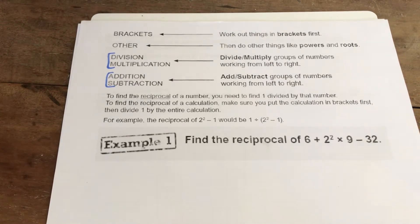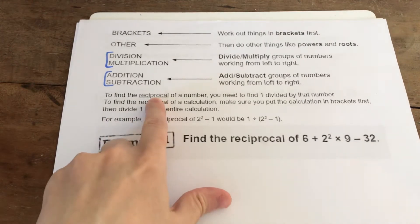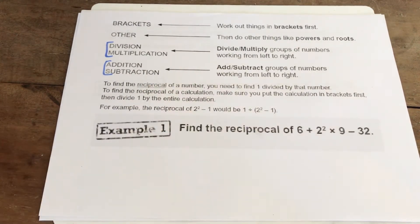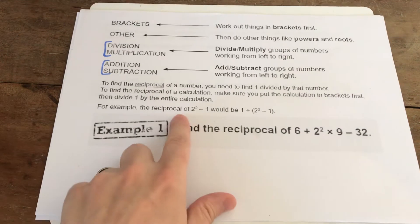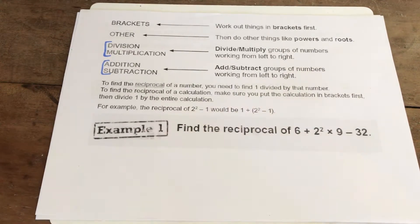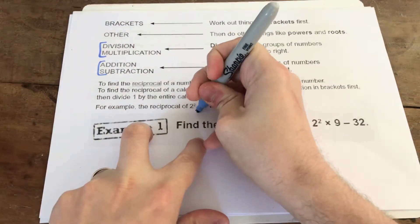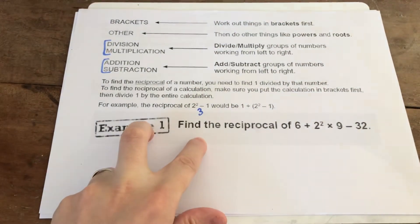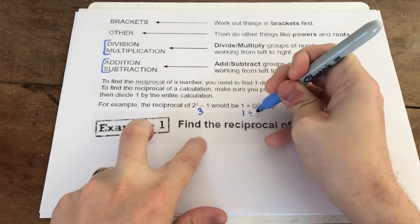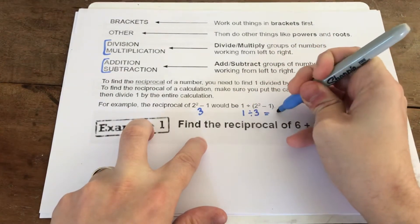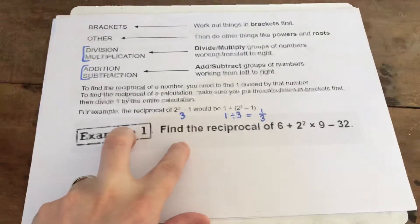The other thing that we're going to use today, or the other topic, is we're going to look at finding the reciprocal of a number. So the reciprocal of a number is what you get when you divide 1 by that number. So if we have a look at this down here, to find the reciprocal of 2 squared minus 1. Well 2 squared is 4 minus 1 is 3. So to get the reciprocal of that number, you do 1 divided by 3 and you can write that as a fraction, which is 1 over 3.